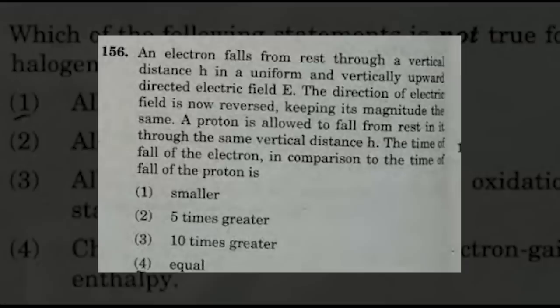The next question: an electron falls from rest through a vertical distance h in a uniform vertically upward directed electric field E. The direction of the electric field is now reversed, keeping its magnitude the same, and a proton is allowed to fall from rest through the same vertical distance h. The time of fall of the proton compared to the electron is — suggested answers: option 1: smaller, and option 4: equal.